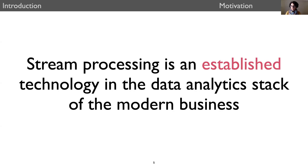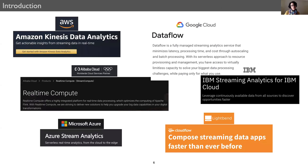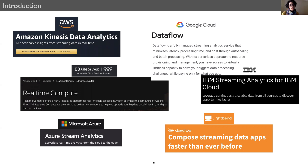Stream processing is today at its prime time. It is an established technology in the data analytics stack of every modern business. All major cloud providers offer streaming data flow pipelines and online analytics as managed services. Some of the most popular include AWS Kinesis, Alibaba Real Time Compute, both of which are based on Apache Flink, Azure Stream Analytics relying on MSR Streel, Google Cloud Dataflow, IBM Streams and Lightband, and so on.